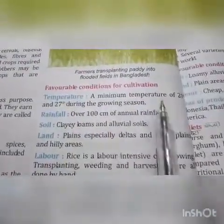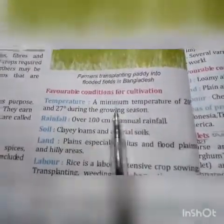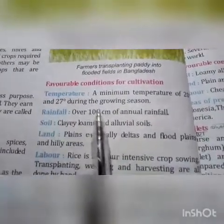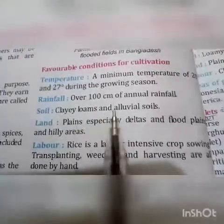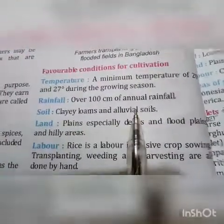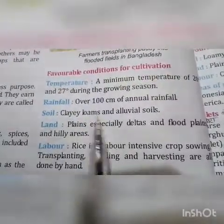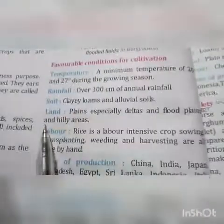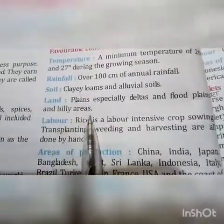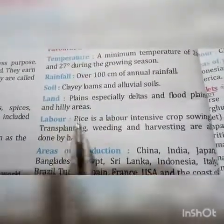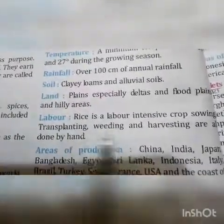Favorable conditions for rice cultivation: temperature minimum 20 to 27 degrees during growing season; rainfall over 100 cm annual rainfall; soil — loam and alluvial soil; land — plains especially delta and flood plains and hilly areas. Rice is a labor-intensive crop; sowing, transplanting and harvesting are all done by hand.